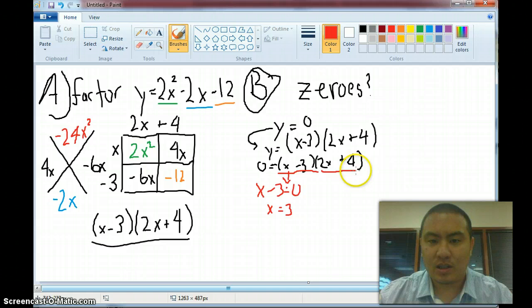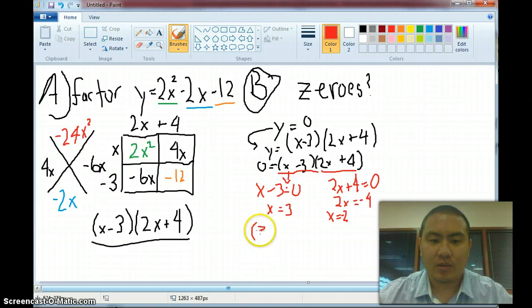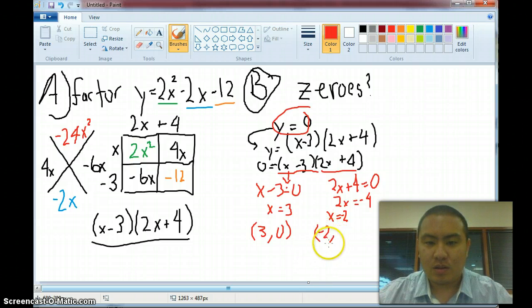And what about this one? This one I treat the same way. 2x plus 4 equals 0. And that gives me 2x equals negative 4 and x equals negative 2. So if I look at these points this tells me that it should be 3, and I can check here that y is 0, 3, 0. And this one should be negative 2 comma 0.